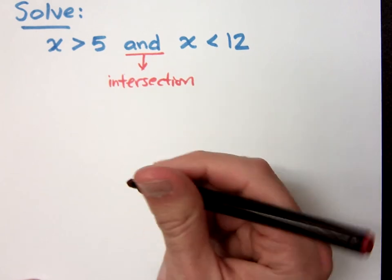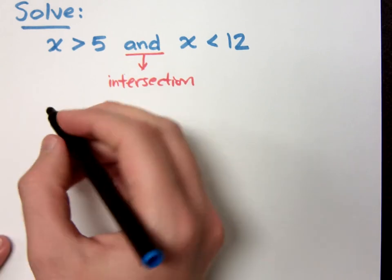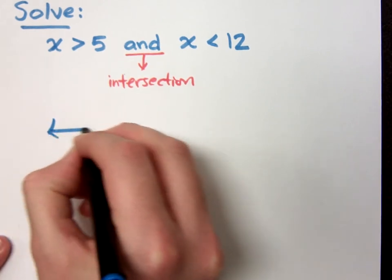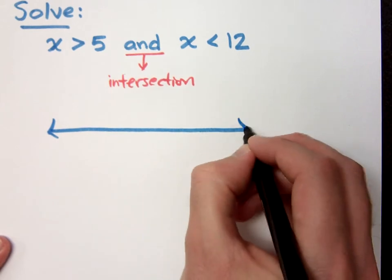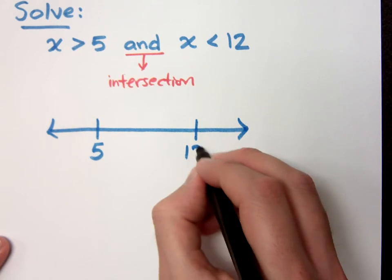Intersection is where things overlap, where they intersect, where they cross, what they have in common. So, what we can do here is draw this number line. Pay attention to the order: 5 and then 12.